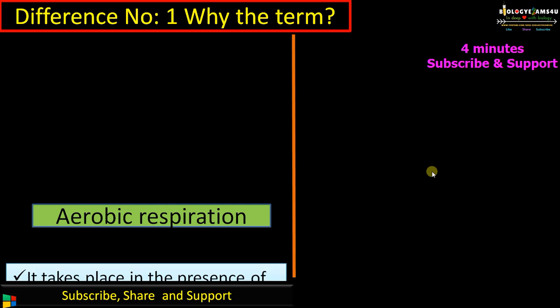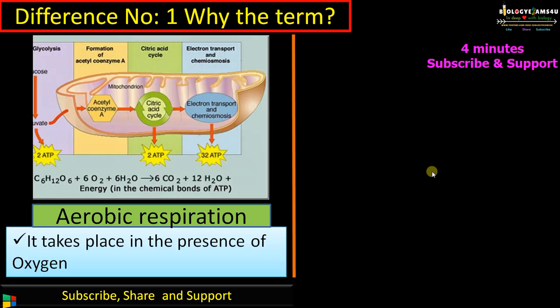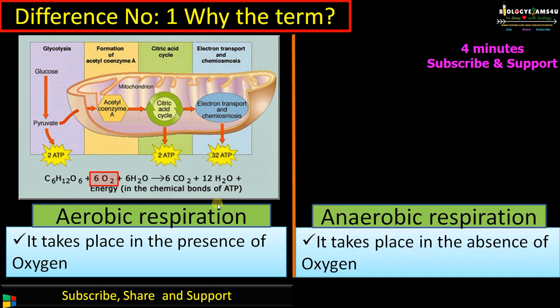Difference number one: why the term aerobic respiration? As the term indicates, it takes place in the presence of oxygen. In aerobic respiration, oxygen is involved, where glucose is oxidized to form carbon dioxide and water with the release of energy. This reaction is called an oxidation process as oxygen is added and hydrogen is removed.